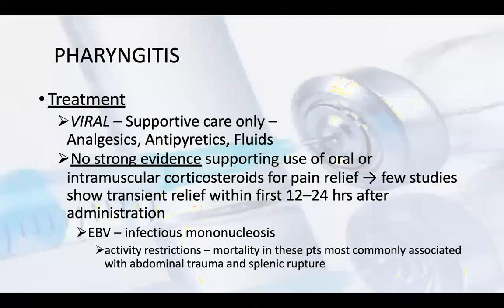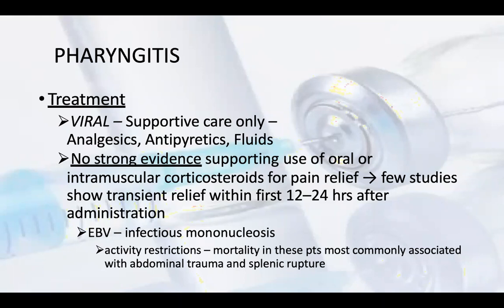For viral pharyngitis, supportive care only is indicated — there is no antiviral for this. Analgesics, antipyretics such as acetaminophen/paracetamol, and fluids can be added. Corticosteroids such as dexamethasone may be considered for pain relief, with some studies showing transit relief within the first 12 to 24 hours after administration. For EB virus infectious mononucleosis, activity restrictions are needed, with mortality most commonly associated with abdominal trauma and splenic rupture if untreated.